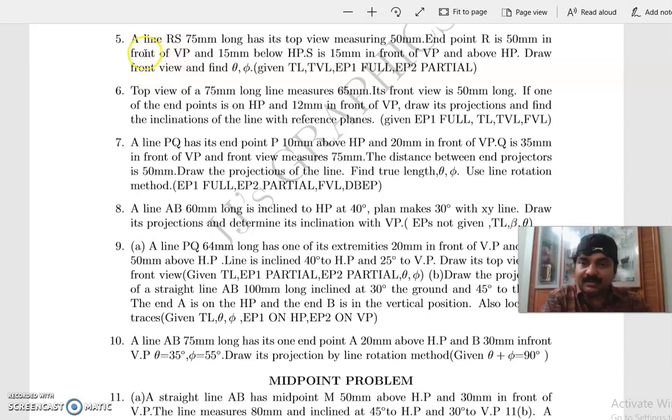Now let's do problem number 5. A line RS 75mm long has its top view measuring 50mm. Endpoint R is 50mm in front of VP and 15mm below HP.